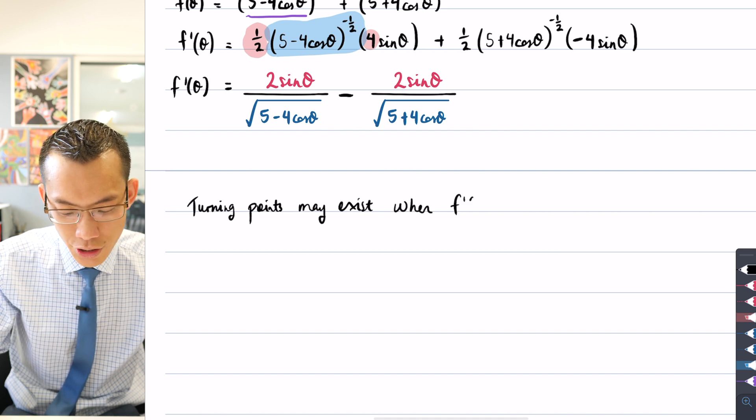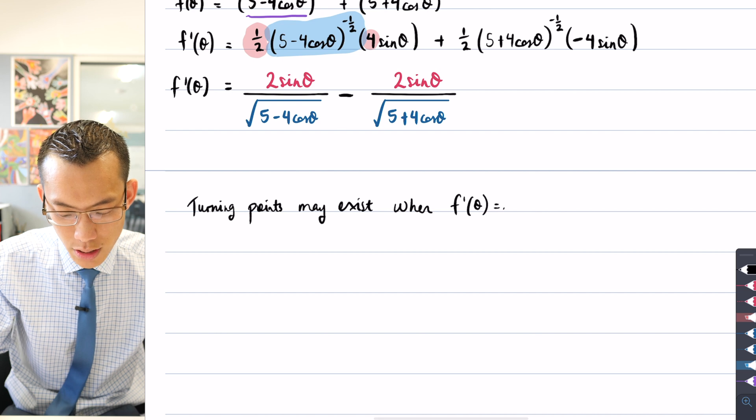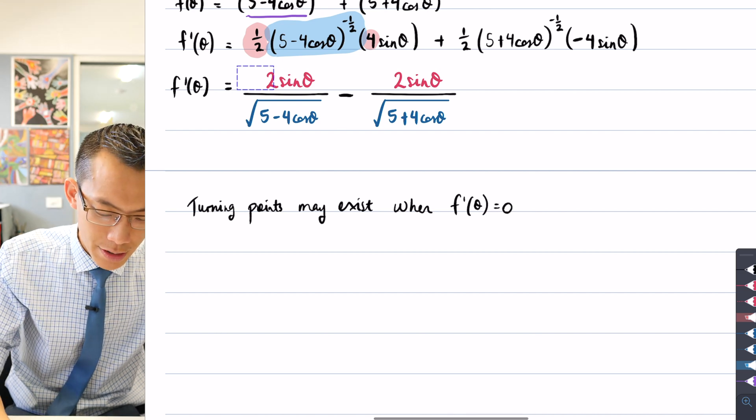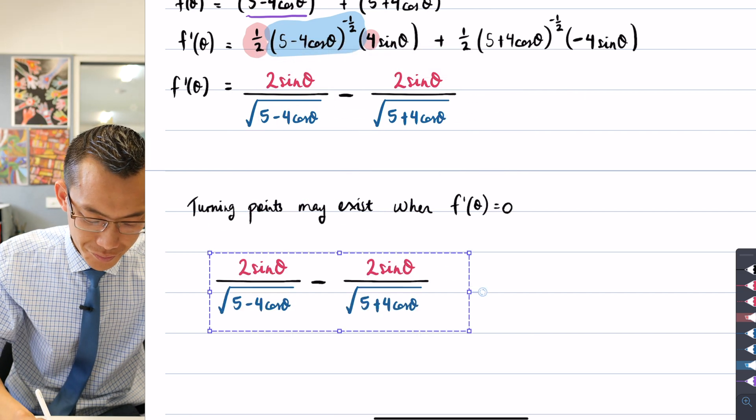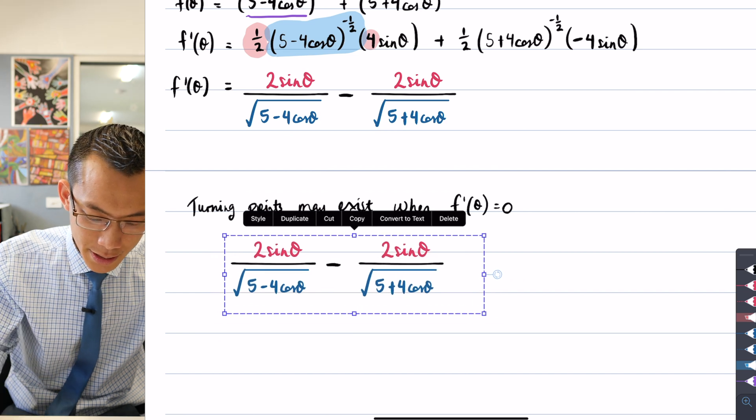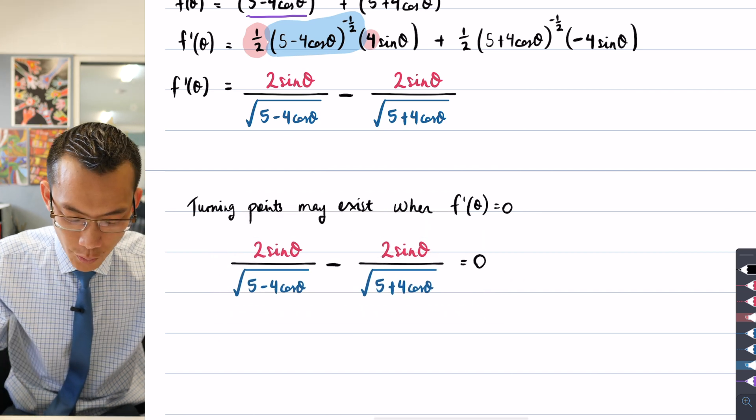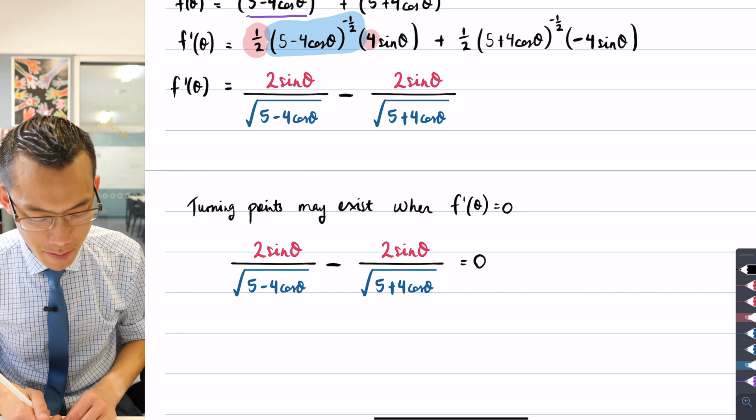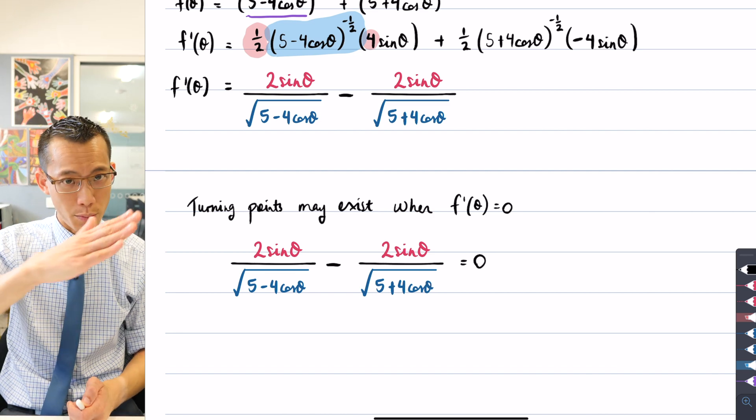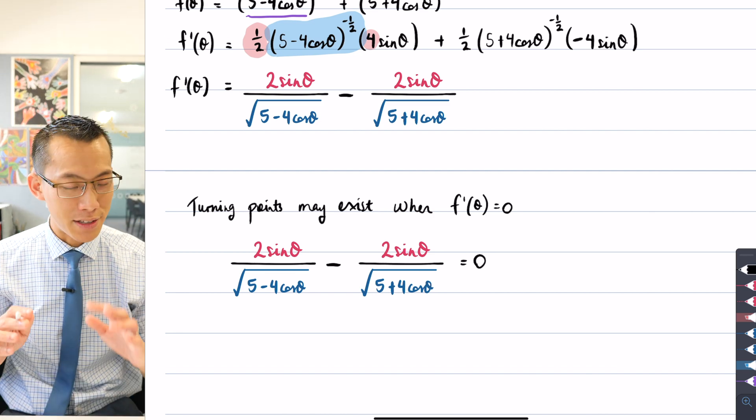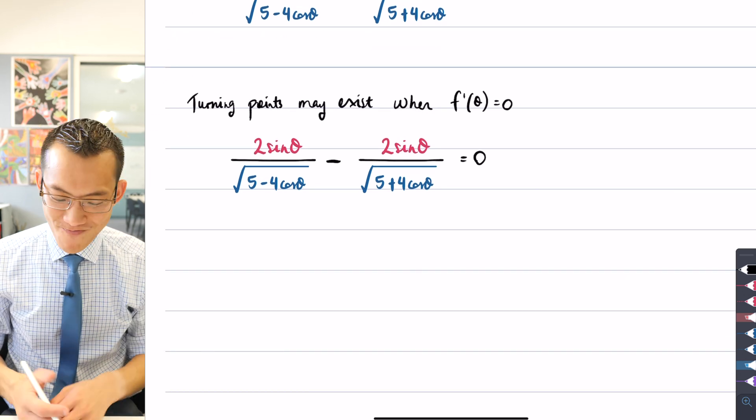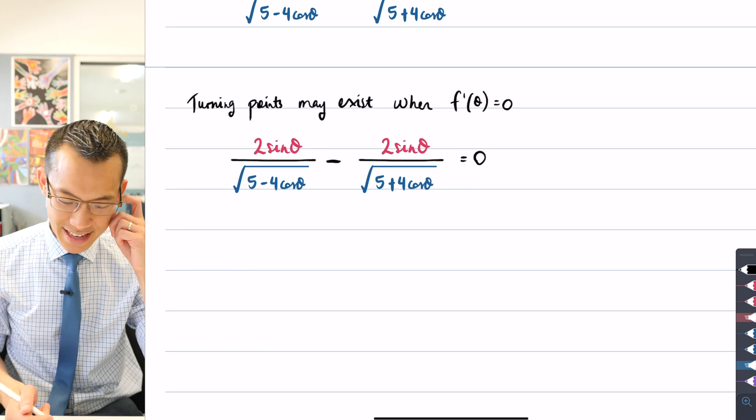So I'm getting f'(θ) = 0. So that's everything you can see here. I want that to equal zero. Of course, that's not a guarantee of turning points. We might just get stationary points, a horizontal point of inflection, but we'll have to deal with that problem a bit later on. How do we find when this thing is equal to zero?